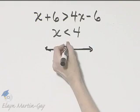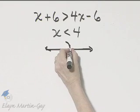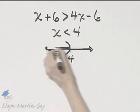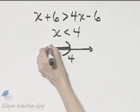Here's 4. Because of the less than, I'll place a parenthesis and I'll shade less than 4.